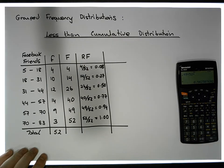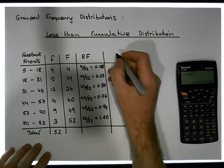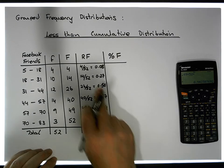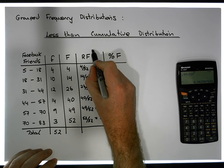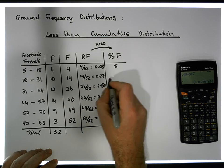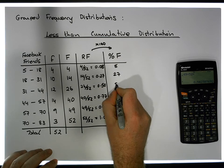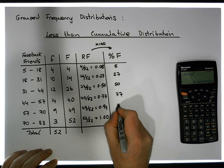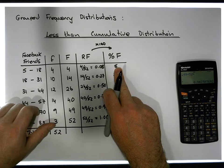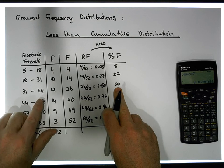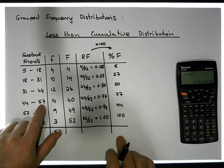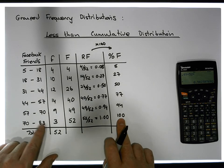Finally, to create percentage less than cumulative frequencies, we take our relative values and multiply by 100. So: 0.08 × 100 gives 8%, then 27%, 50%, 77%, 94%, and finally 100%. So 8% of observations are less than 18, 27% are less than 31, 50% are less than 44, 77% are less than 57, 94% are less than 70, and 100% of the observations are less than 83.